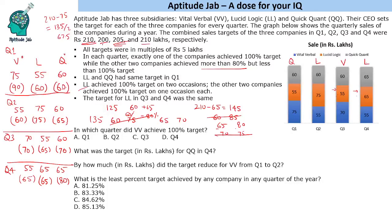We have now figured out all the sales targets for all quarters. Looking at the questions: In which quarter did VV achieve 100% target? — Q3. What was the target in lakhs for QQ in Q4? — 80 lakhs. By how much did the target reduce for VV from Q1 to Q2? — In Q1, VV had a target of 90 lakhs; in Q2, it was 60 lakhs — a reduction of 30 lakhs.